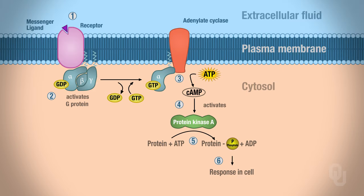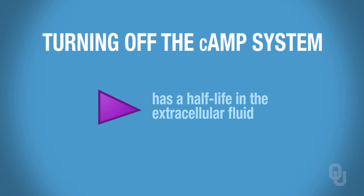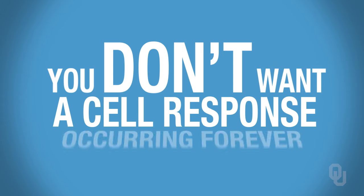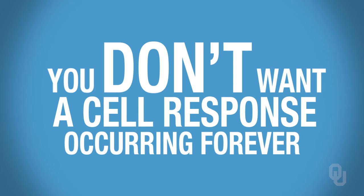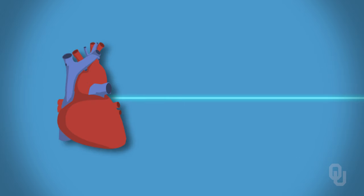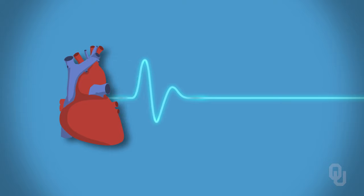The response inside the cell will come later — when we talk about very specific tissues, we'll tell you exactly what that response is. We'll need to turn off the cyclic AMP system. The ligand has a half-life in the extracellular fluid and will eventually be degraded. You don't want the response inside the cell occurring forever. For example, if you need to increase your heart rate because of a sympathetic response, you don't want your heart rate to stay elevated all the time — you want it to be able to come back down to normal.